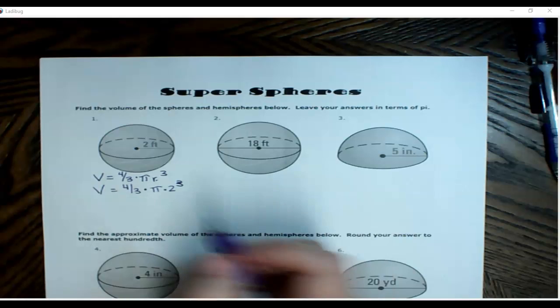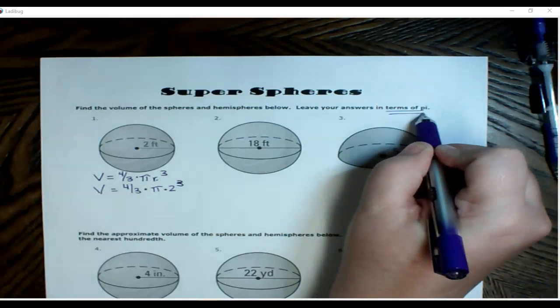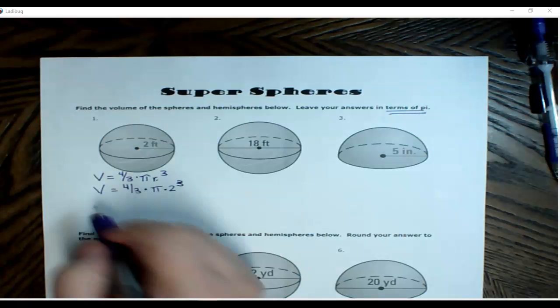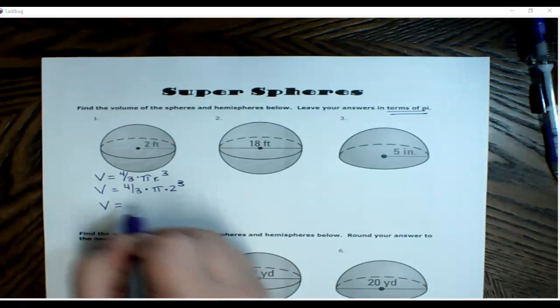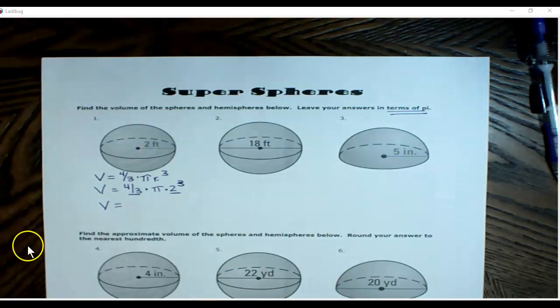Now we're ready to find our answer, but if you notice, the directions in this section say, leave your answer in terms of pi. So that means I'm going to leave my pi symbol for my answer. Instead, I'm just going to multiply together, four-thirds times two cubed.